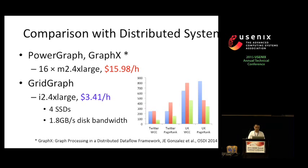We also compare our system with distributed ones. We can see that by using GridGraph on the larger I2.4X-large instance, which contains four SSDs, we can achieve even better performance than PowerGraph and GraphX on the 16 node cluster, and costs more than four times cheaper.